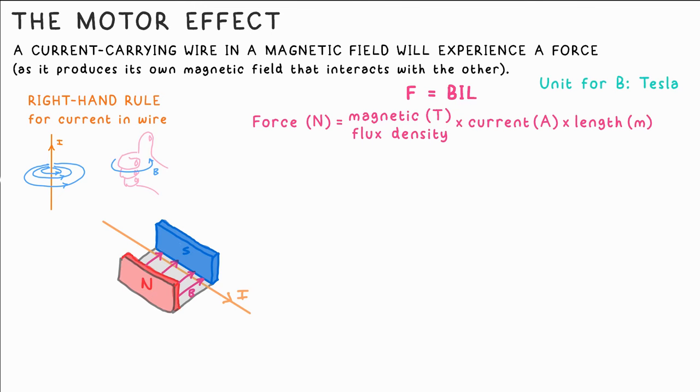Note that this equation only works as it is if the current and magnetic field lines are perpendicular to each other. If the wire is parallel to the field lines it will experience no force.